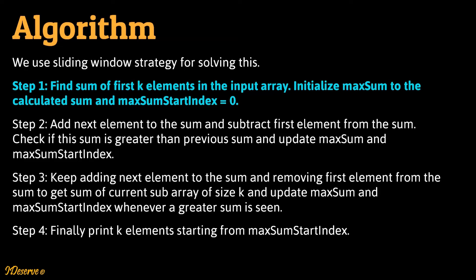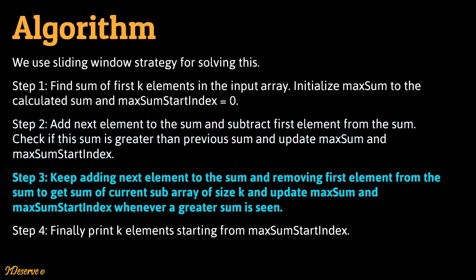The first step is to find the sum of the first k elements in the input array. Initialize max sum to the calculated sum and max sum start index to 0. Then add the next element to the sum and subtract the first element from the sum. Check if this sum is greater than the previous sum and update max sum and max sum start index. Keep sliding the window and update max sum and max sum start index whenever a greater sum is seen. Finally, print k elements starting from max sum start index.